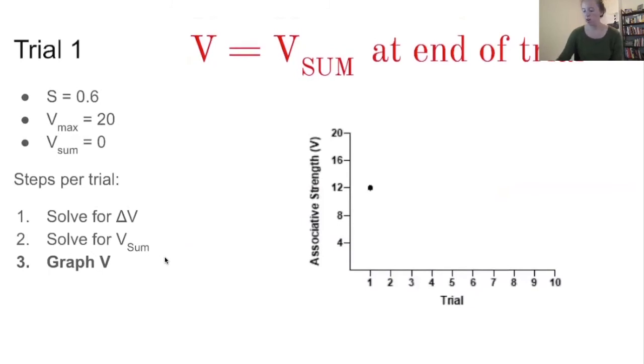The very last thing we're going to do with that for trial one is to graph that V value that we just obtained. So I have it already shown here. To graph things of this nature, you're going to have trials along the bottom x-axis, and so that would be the number of times that you've paired those two stimuli together. And then on your y-axis, we have associative strength, so our V value. So for this very first trial, you can see that it's going to be 12.